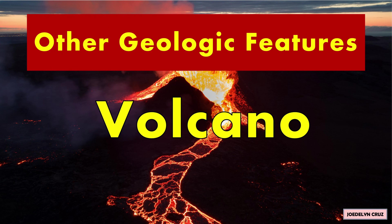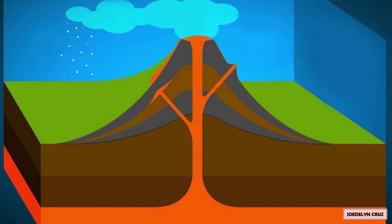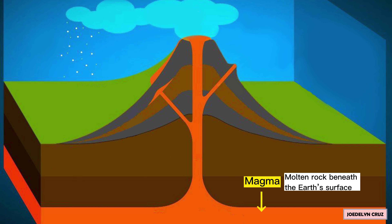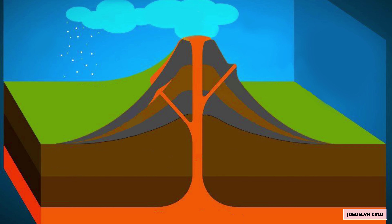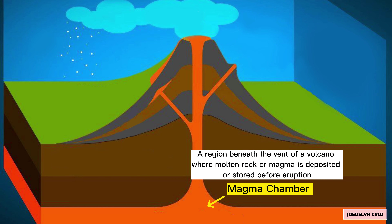Other Geologic Features of a Volcano. Magma is a molten rock beneath the Earth's surface. The magma chamber is a region beneath the vent of a volcano where molten rock or magma is deposited or stored before eruption.